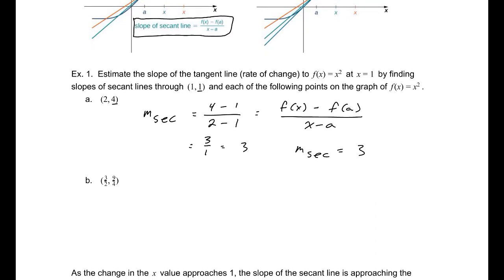Now let's consider the slope of that secant line, but we're going to go through the point 3 halves, 9 fourths. So f of x minus f of a, divided by x minus a, our f of x will be 9 fourths, minus f of a, which is 1, divided by x, 3 halves, minus a, which is 1. That will be 5 fourths and 1 half. So simplifying that, we get 5 halves. So the slope of our secant line is 5 halves.